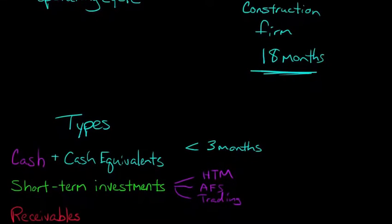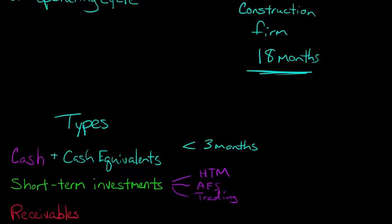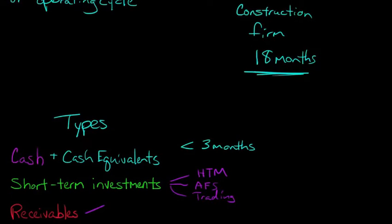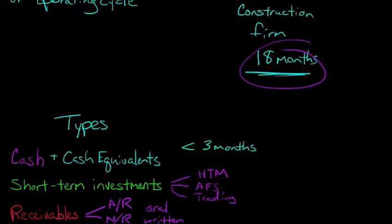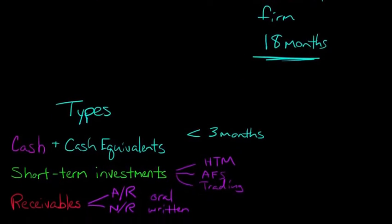And then we also have receivables, which is a very common current asset, particularly accounts receivable. I'll just abbreviate that, A/R, accounts receivable. So that's basically somebody owes us money. There's some kind of oral promise to pay. So we sold something to a customer and they owe us money. And then there's also note receivable, which is basically a written promise to pay from one of our customers. We made a sale, they didn't pay us cash, they're going to. We expect that within one year or the operating cycle.